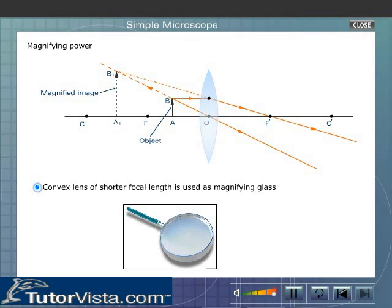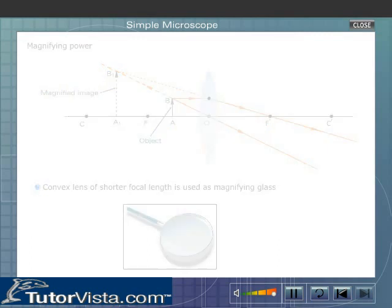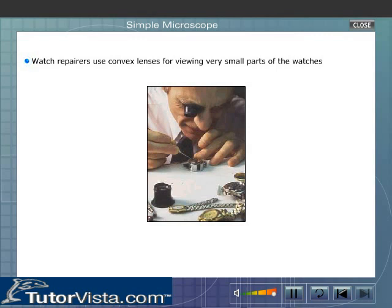However, the maximum magnifying power a convex lens can have is about 5 of the magnifying glass. Watch repairers use convex lenses for viewing very small parts of the watches.